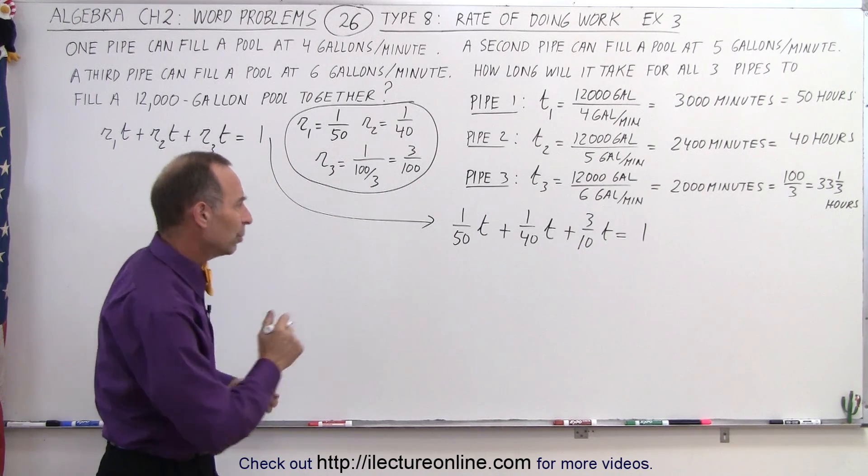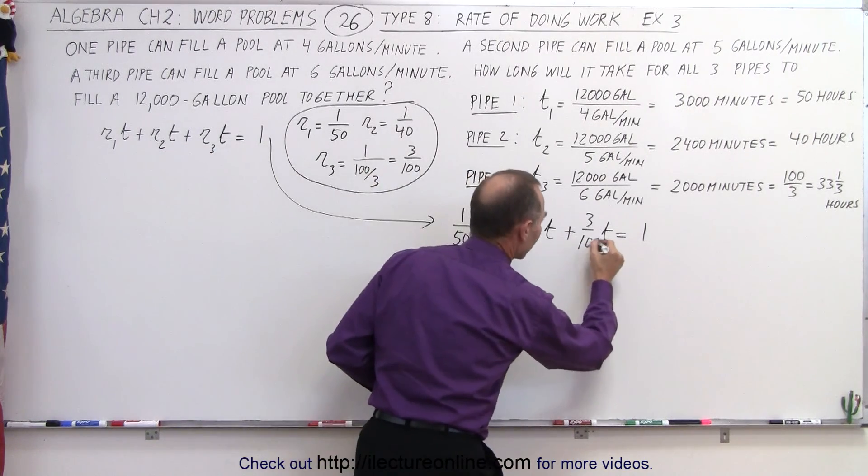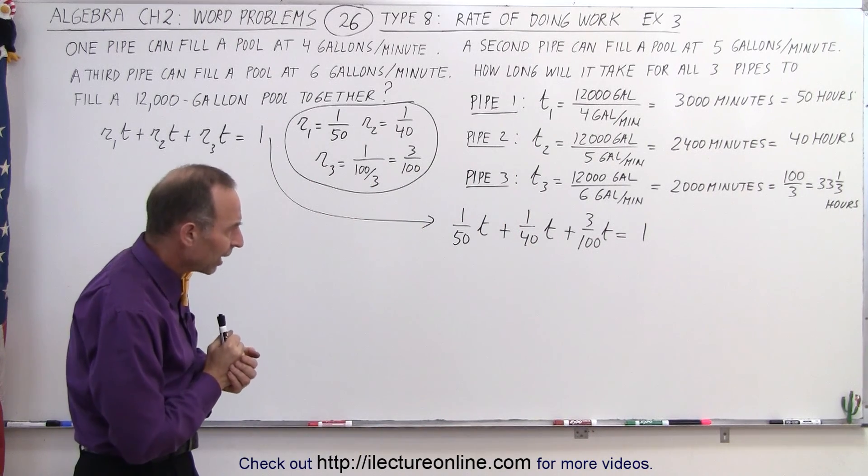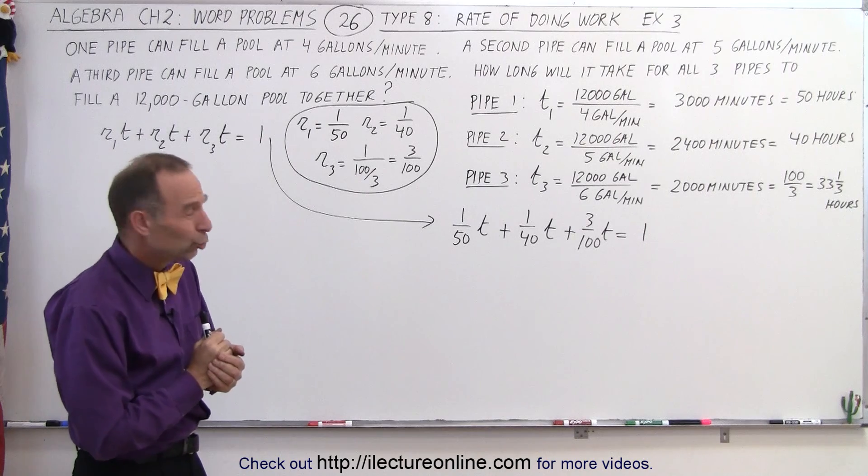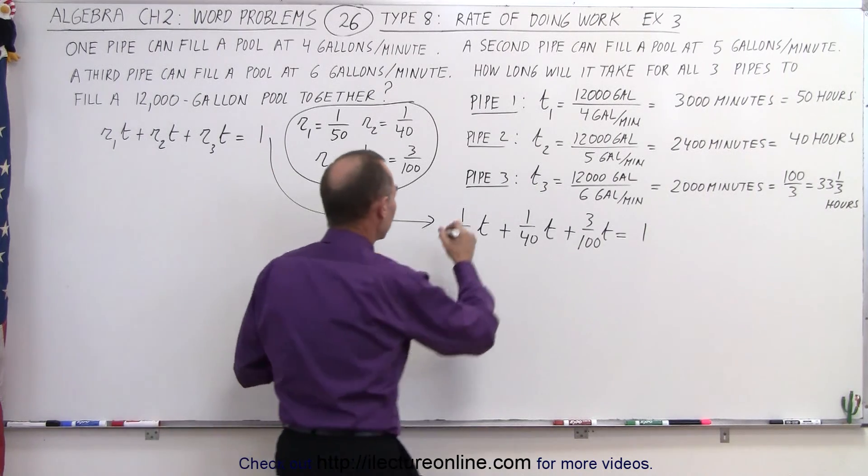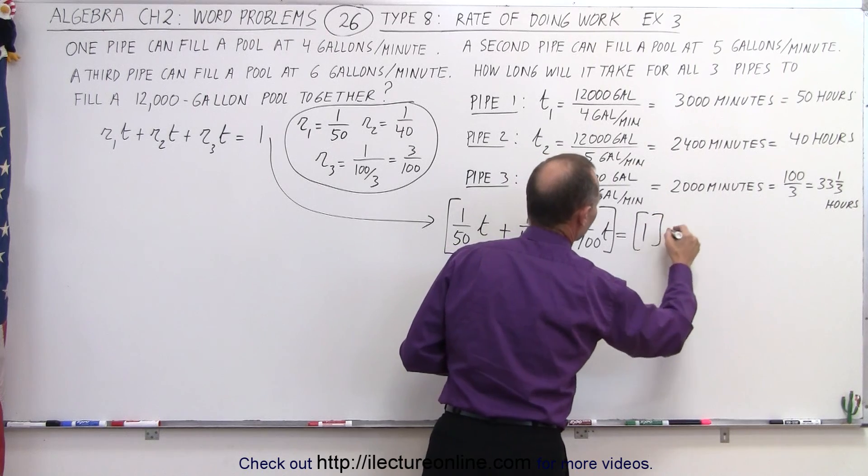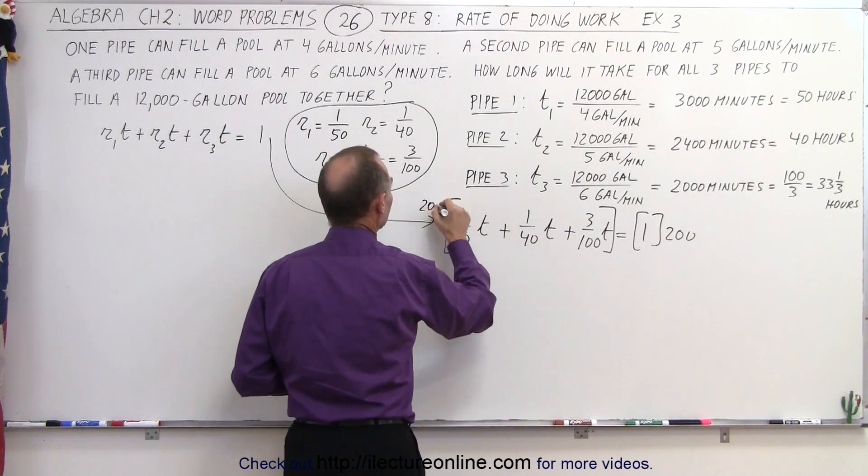Well, we are going to have to—I think I'm missing a zero here. It's 3 over 100. So now I need a common denominator, which I believe is 200. If I multiply both sides by 200, I can get rid of the fractions. So multiply both sides by 200.